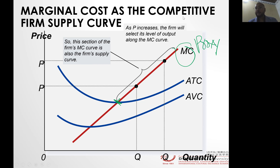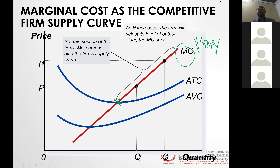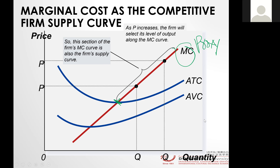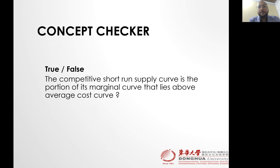Do you understand, guys? True or false: the competitive firm's supply curve is a portion of its marginal cost curve that lies above the average total cost. True or false? — True. Correct.